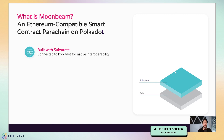Moonbeam has a baseline EVM layer for EVM execution, with added benefits on top. We're built with Substrate, which is an SDK for building blockchains. One of the biggest benefits of Substrate is that it allows you to easily build a blockchain and connect to Polkadot natively, benefiting from native interoperability. You can also build blockchains with your own SDK or language, but you need to follow certain guidelines for Polkadot connectivity, which is a bit more complicated.